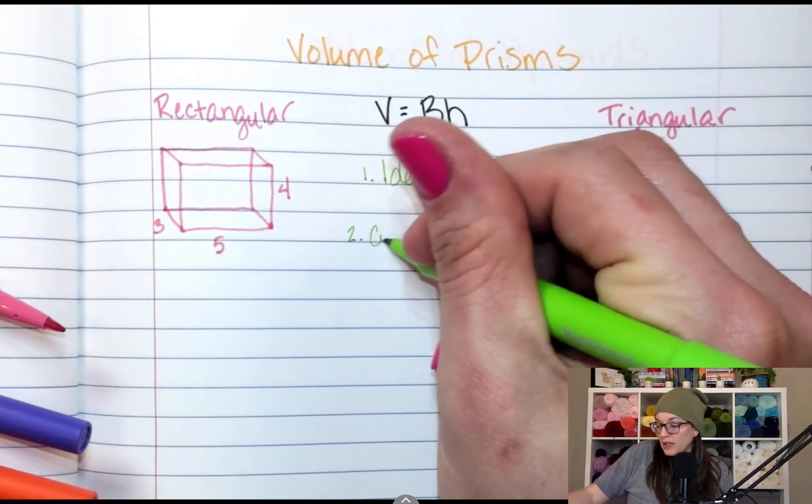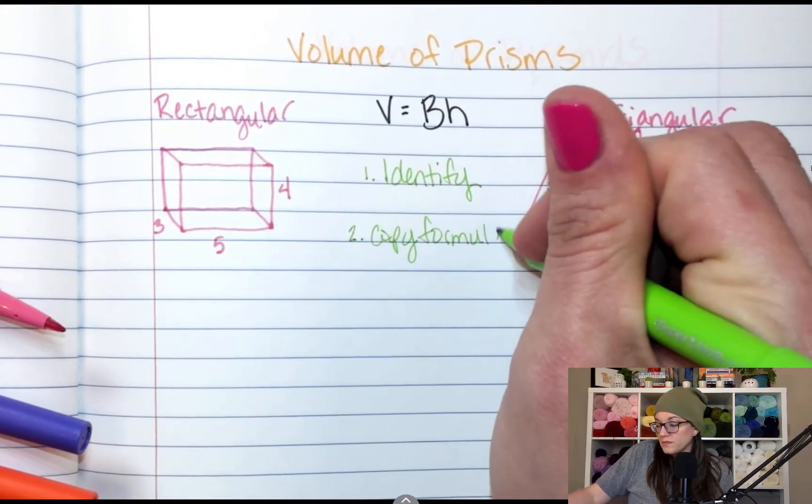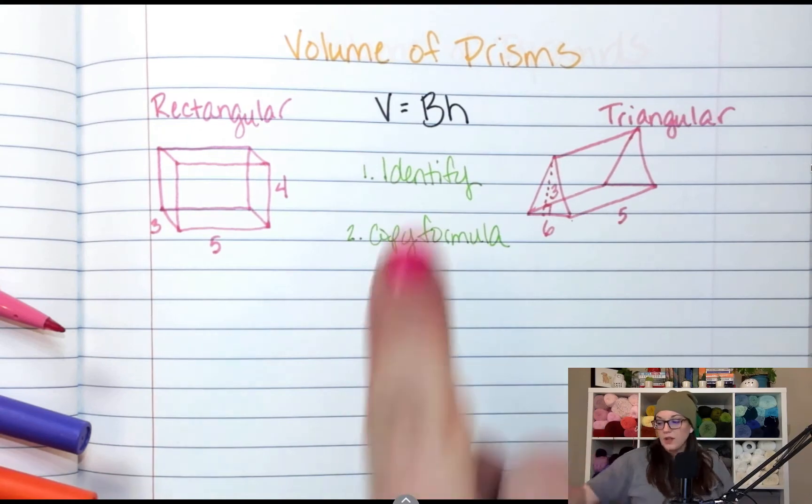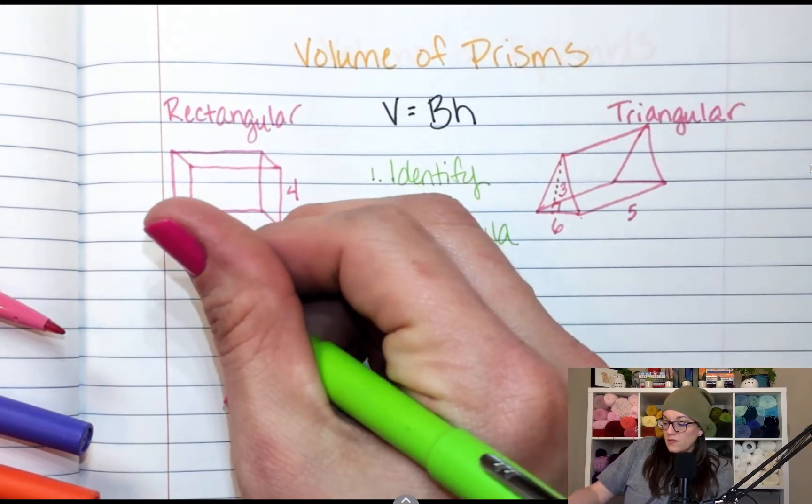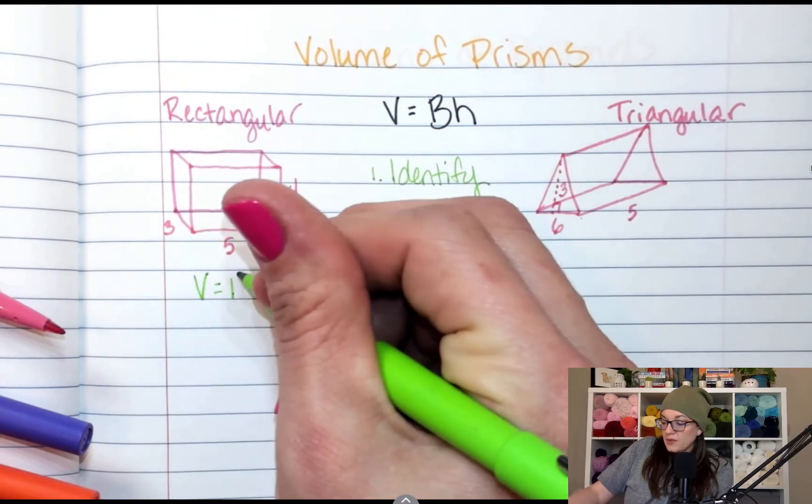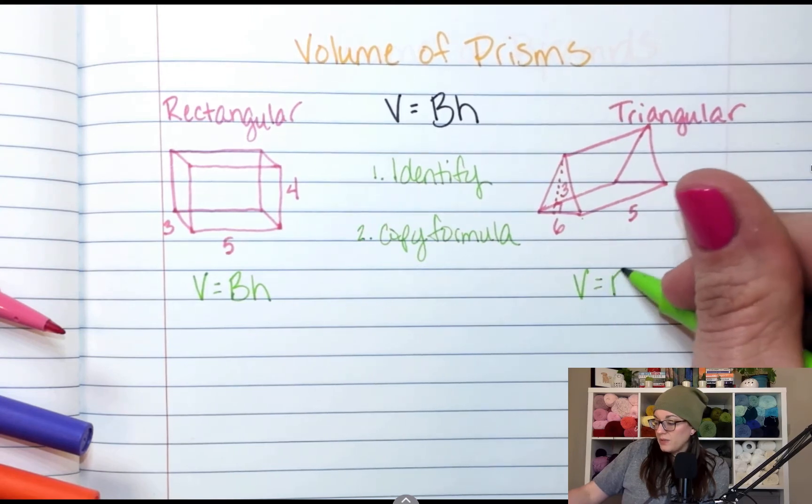Once you've identified the shape, then you're going to write the formula. You're going to copy formula. So identify shape, copy the formula. The formula here is V equals capital BH. V equals capital BH. And V equals capital BH.